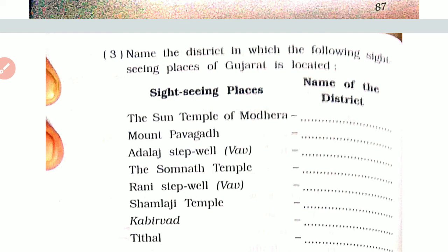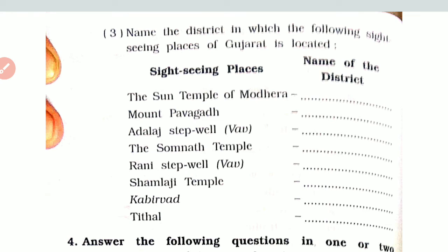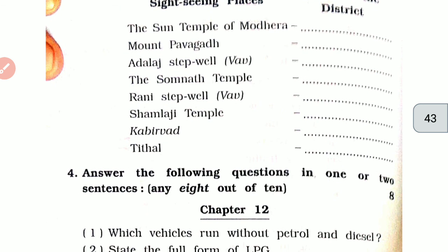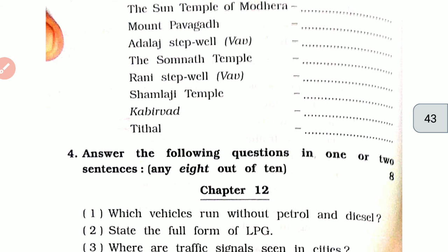Name the district in which the following sightseeing places of Gujarat are located. The Sun Temple of Modera — Mehsana district. Mount Pavagadh — (Panchmahal district). Rani ki Vav — Patan.